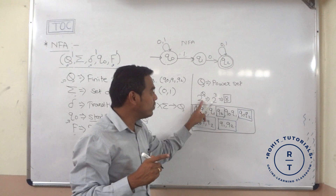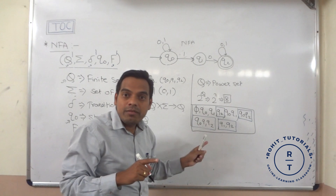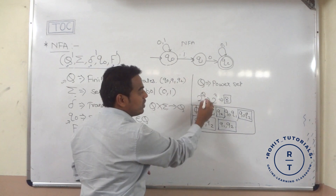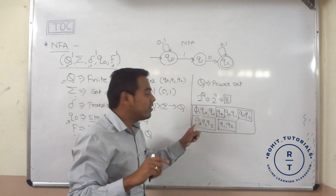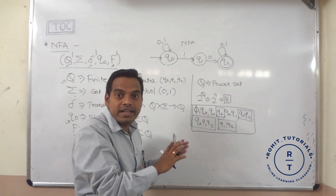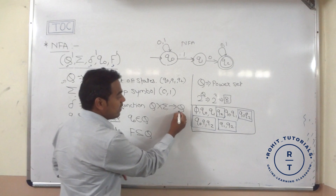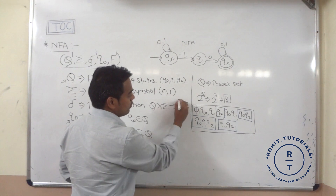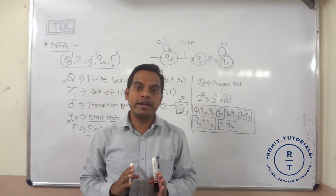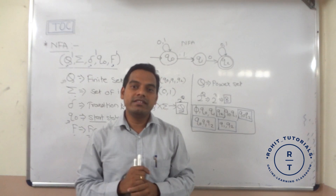So that is why we consider F as a subset of capital Q. The main important point in NFA is that Q', the transition function, and the final states all change. The summation (input symbols) and the starting state remain as they are — only those three factors change. One important point: the power set of Q is represented as 2 raised to Q. Suppose we have 2 states — q0, q1 — so 2 raised to 2 equals 4 states may come. We consider total states based on the power set of Q in NFA. In the next lecture, we will see some problems based on non-deterministic finite automata.